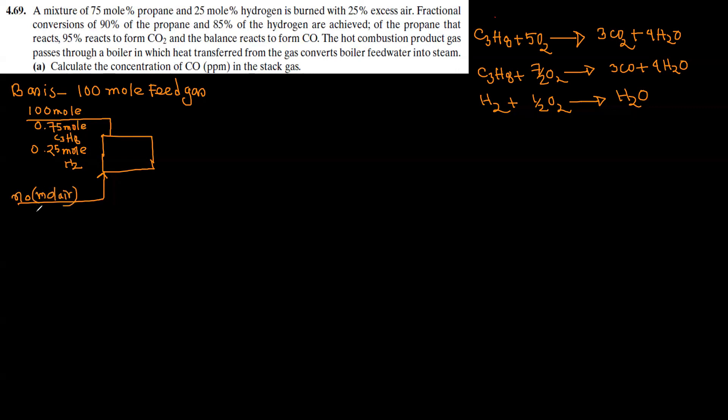And I gave 25% excess air, which is n0. In the product gas, what do I have? C3H8, let's say n1 mol. Hydrogen n2 mol. Carbon dioxide n3 mol. Carbon monoxide n4 mol. Water n5 mol. Oxygen n6 mol. And nitrogen n7 mol.